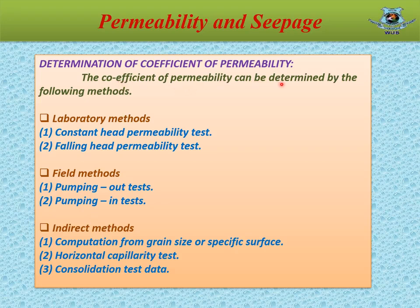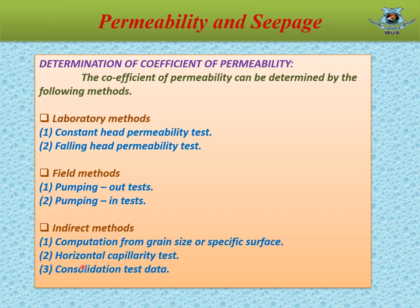The coefficient of permeability can be determined by the following methods. First, laboratory methods, which include the constant head permeability test and the falling head permeability test. Second, field methods, which include the pumping out test and the pumping in test. Third, indirect methods, which include computation from grain size or specific surface, the horizontal capillarity test, and consolidation test data.